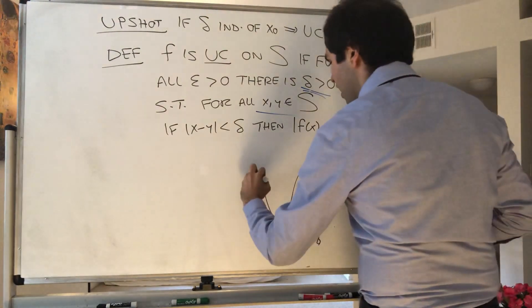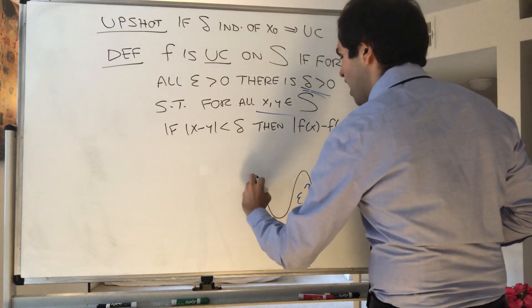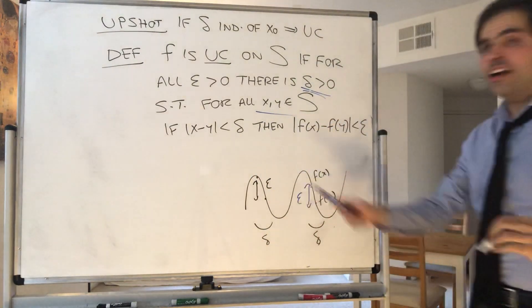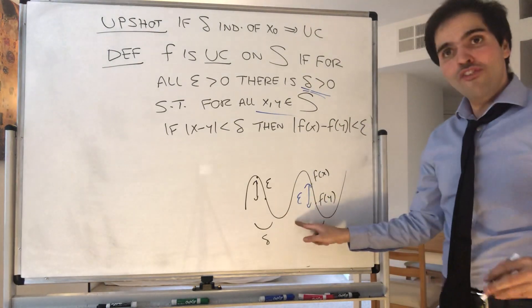And same thing here. No matter which point we're at, we have that f of x and f of y are at most epsilon apart. So this is uniformly continuous.